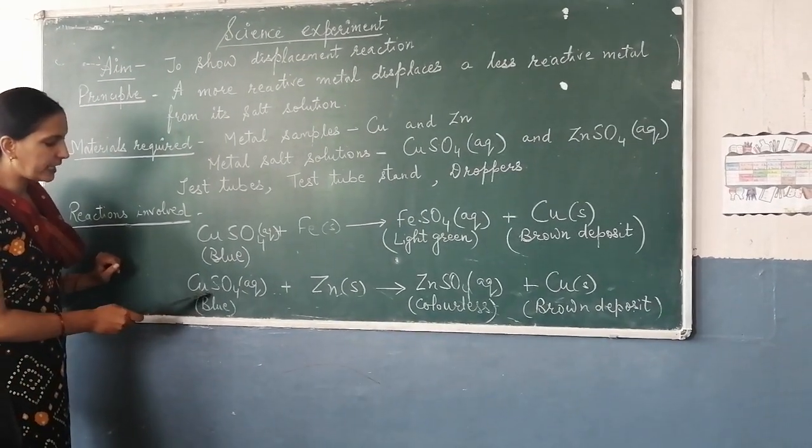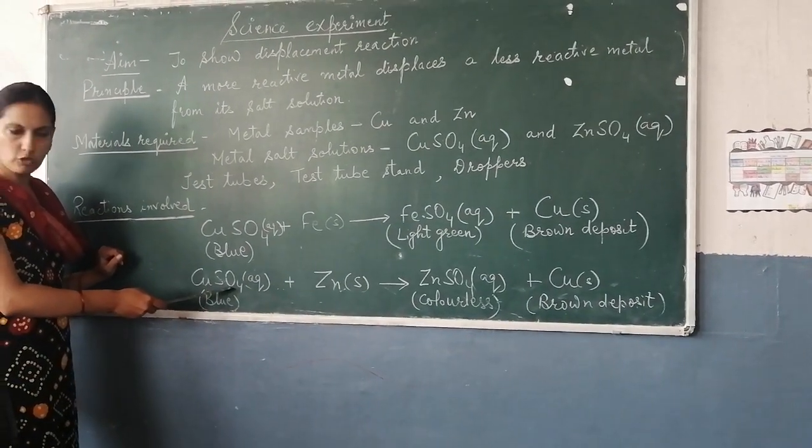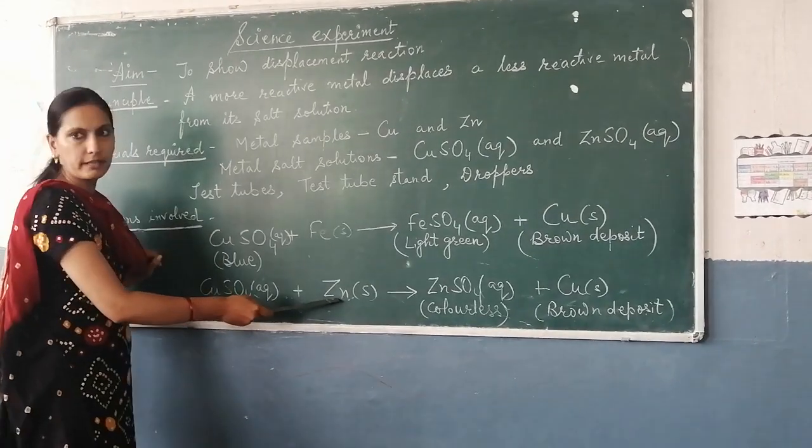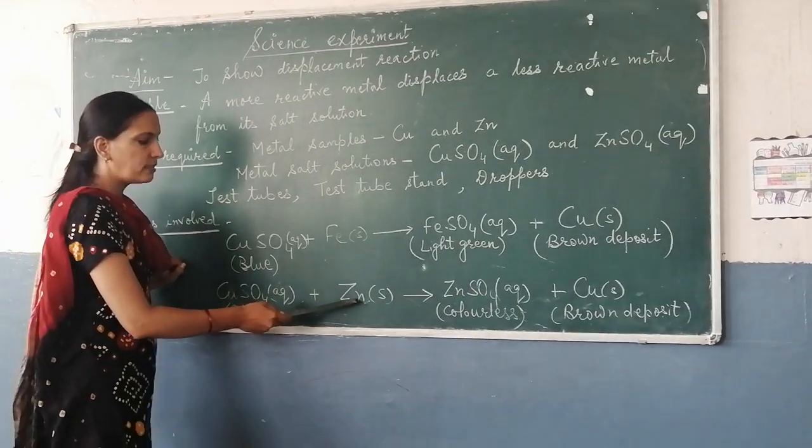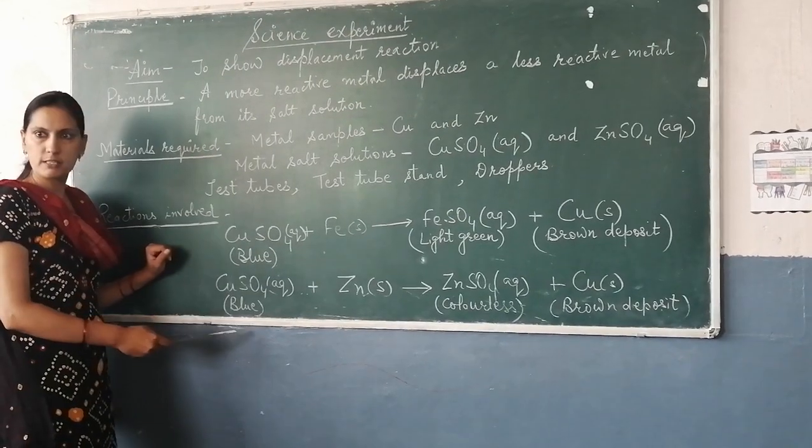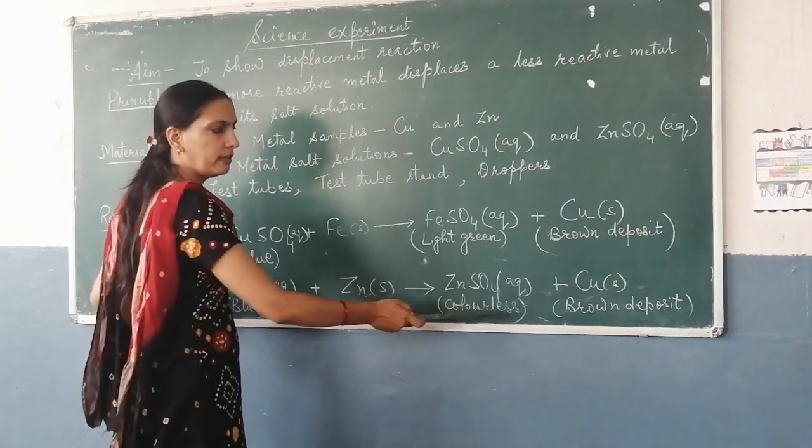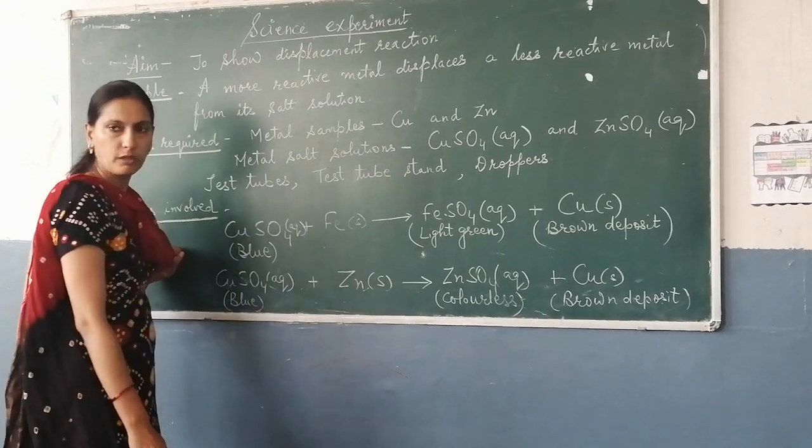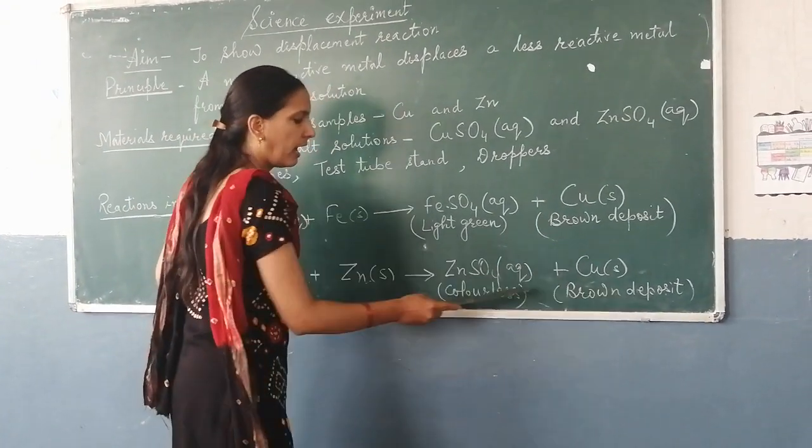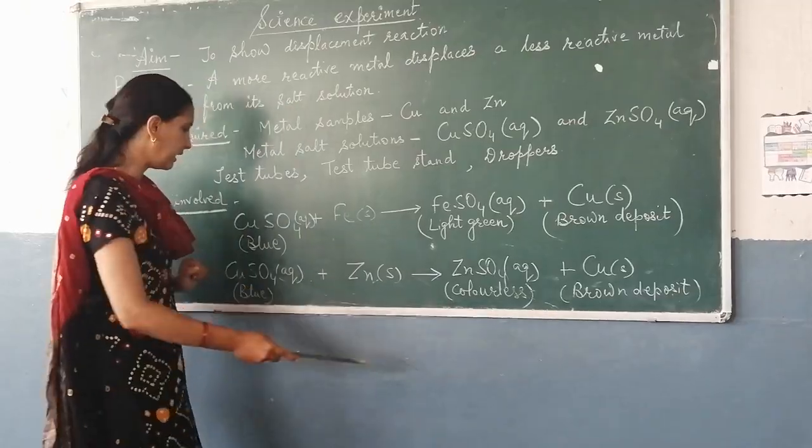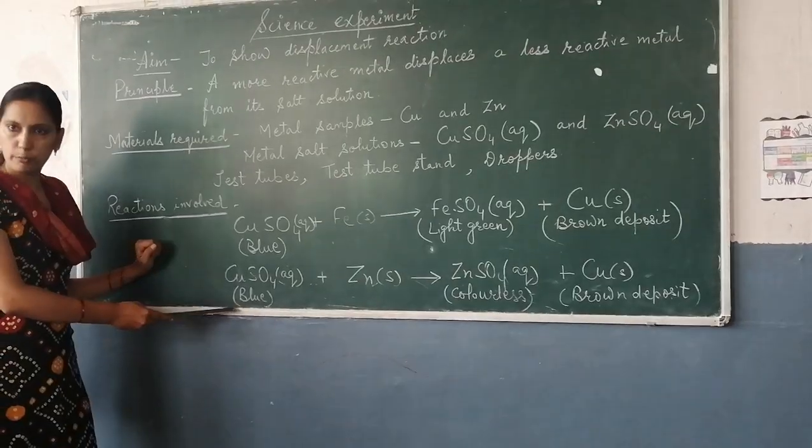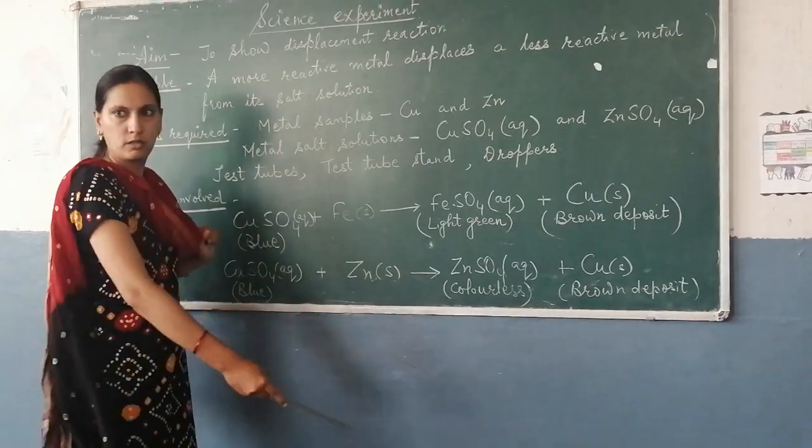Next, we will take CuSO4, copper sulfate solution, plus zinc granules. Zinc is more reactive than copper, so it will displace it from its solution and make zinc sulfate plus copper. We can see brown deposit, and zinc sulfate solution will be colorless from blue.